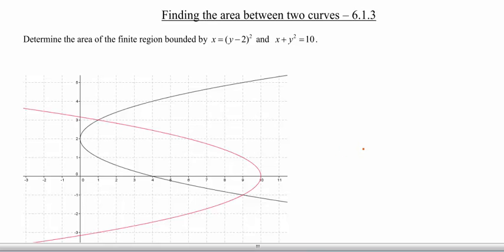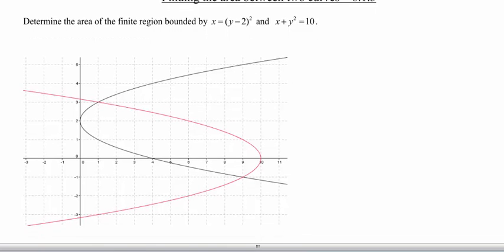Today we're going to look at the area of the finite region bounded by x equals the quantity of y minus 2 squared, and x plus y squared equals 10. I've already used GeoGebra to graph these two functions, and that's only because my drawings would not look nearly this accurate.